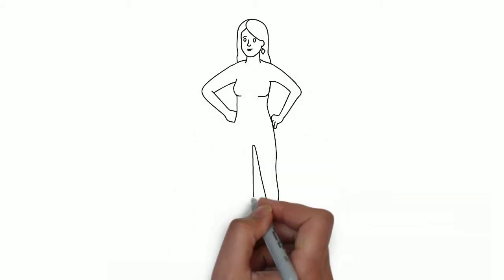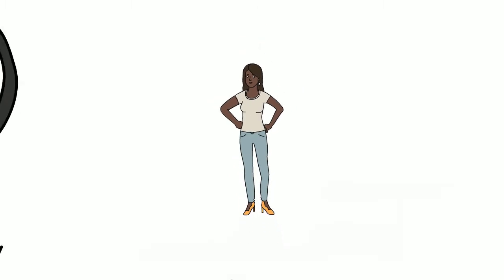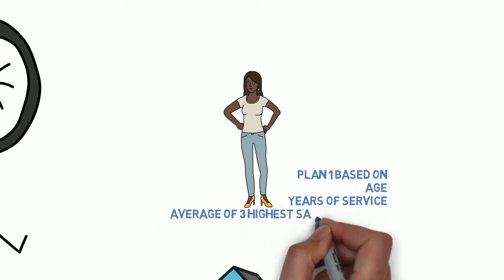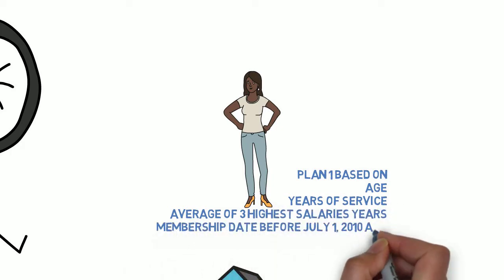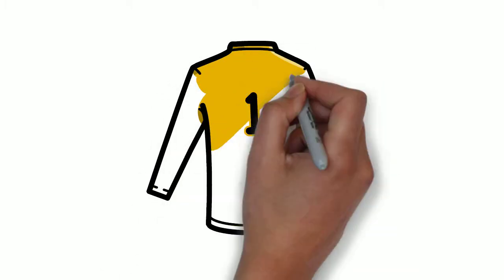Plan 1 is a defined benefit plan, which means it's a straight pension. The retirement benefit is based on your age and credible years of service, and then they also average your final compensation using a formula. Employees whose membership date is before July 1, 2010 and were vested as of January 1, 2013 fall into VRS Plan 1.